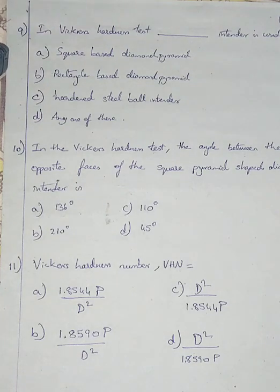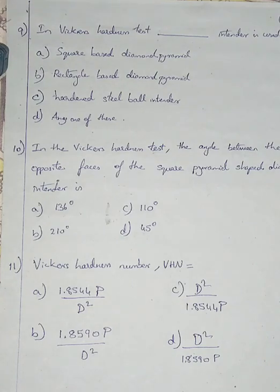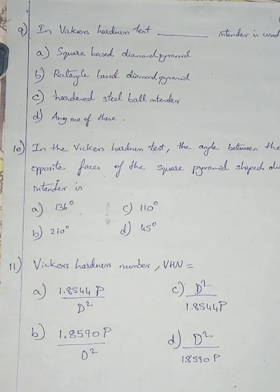Question number 9. In the Vickers hardness test, what type of indenter is used? Option A: square based diamond pyramid. Option B: rectangle based diamond pyramid. Option C: hardened steel ball indenter. Option D: any one of these. For this question, please answer in the comment box as homework.